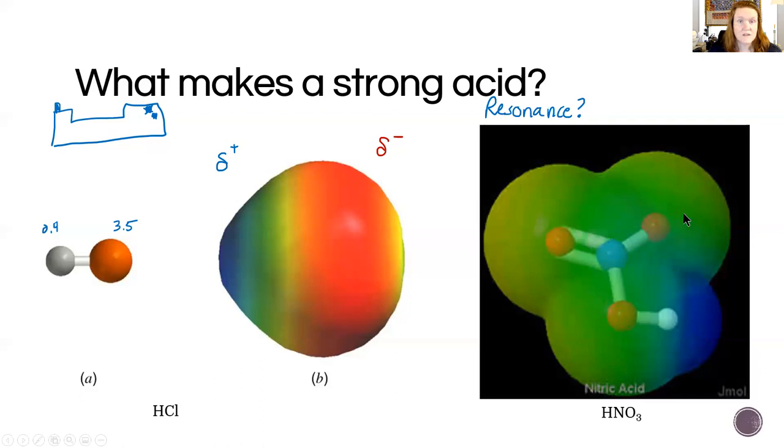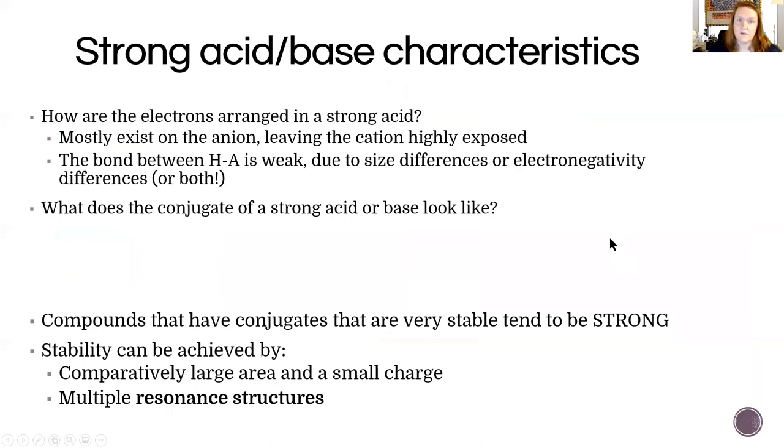Also, if the conjugate that you produce is very stable because of resonance or because they have a high electronegativity so they can bear a negative charge, then it's likely you're going to have a strong acid. A strong acid or a strong base has a stable conjugate, either from resonance or from having a high electronegativity if it's a single atom like chlorine.